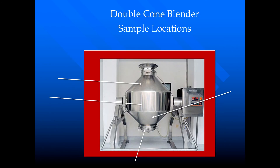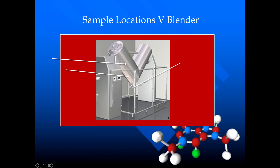Here is the diagram of the double cone blender. You can see that we have to draw samples from different depths — from different levels, including from the bottom as well. Here is the diagram for the V-blender. We have to take samples from different levels, and we also have to take samples from the bottom.